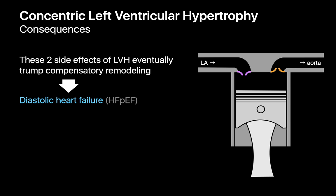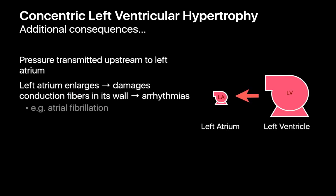There are other downstream consequences of LVH. For example, elevated chamber pressures in the left ventricle transmitted upstream into the left atrium will cause the left atrium to enlarge. Stretching the left atrial wall can damage the conduction fibers in the left atrial wall and lead to arrhythmias such as atrial fibrillation.